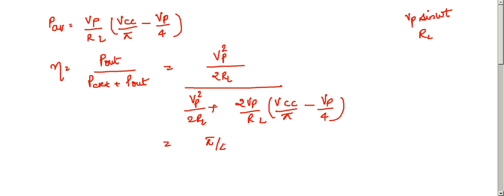we get pi upon 4 vp. If vp is nearly equal to vcc, then the efficiency reaches a maximum of 78.5%, which is equal to pi upon 4. A much more attractive result than that of an emitter follower. And for this reason, the push-pull stages are very commonly used in applications like audio amplifiers.